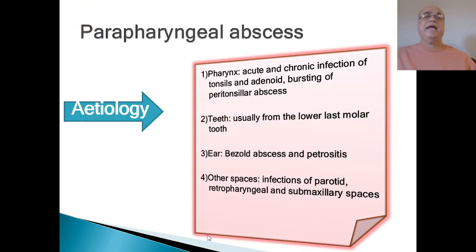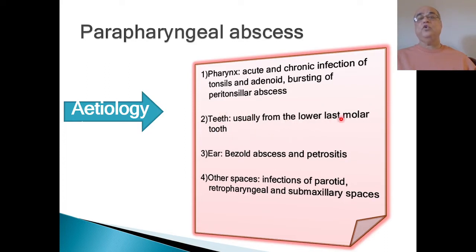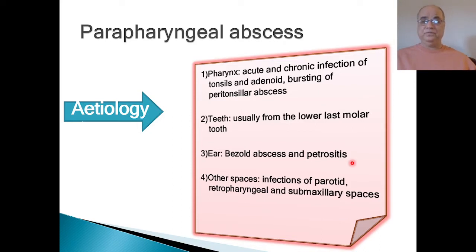The etiology of parapharyngeal abscess is usually upper respiratory tract infections — acute and chronic infections of the tonsils and adenoids, or bursting of a peritonsillar abscess into the parapharyngeal space. Infection can also spread in the reverse direction. Dental infection, usually from the lower last molar tooth, can lead to parapharyngeal space infection. Bezold's abscess or petrositis in chronic suppurative otitis media can also track down to the parapharyngeal space.